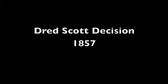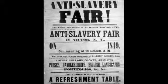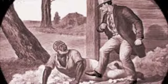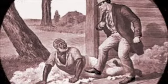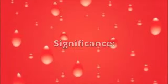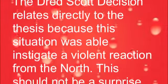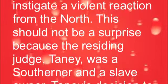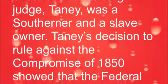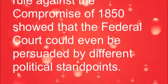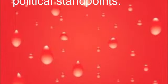The Dred Scott decision was made in 1857. Dred Scott was taken onto free soil by his owner and should have been deemed a free man. Dred Scott sued his owner in Supreme Court, but the presiding judge, Taney, ruled that a Black man did not have any rights similar to those of whites. This decision caused an uproar because Taney was not honoring the Compromise of 1850 — according to the compromise, Dred Scott should have been free. The Dred Scott decision relates to the thesis because the situation was able to instigate a violent reaction from the North. This should not have been a surprise, though, because the presiding judge, Taney, was a Southerner and a slave owner. Taney's decision showed that the federal court could be persuaded by different political standpoints.